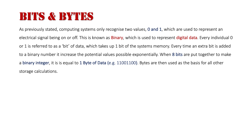Computing systems only recognize two values — zero and one — which are used to represent an electrical signal being on or off. This is known as binary,